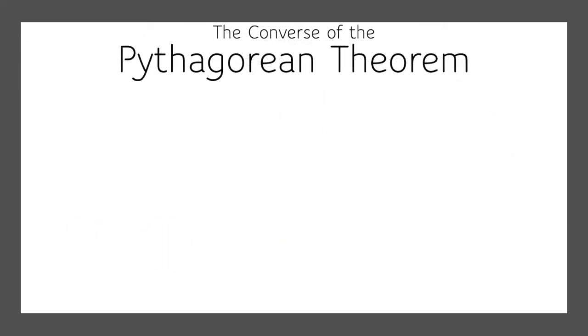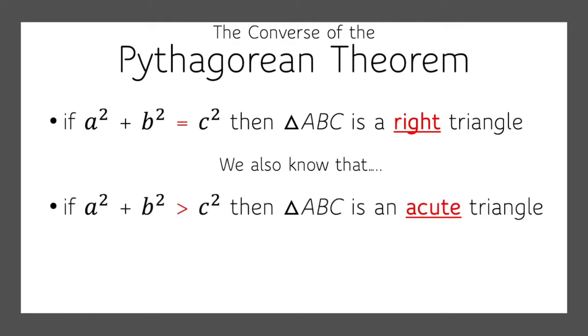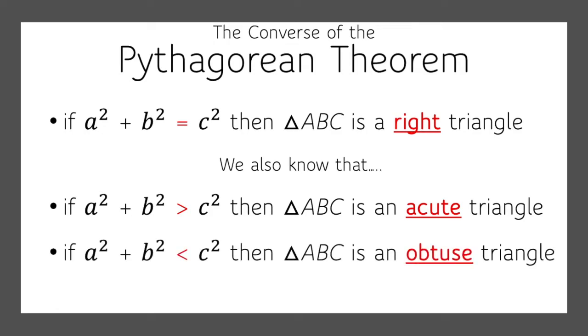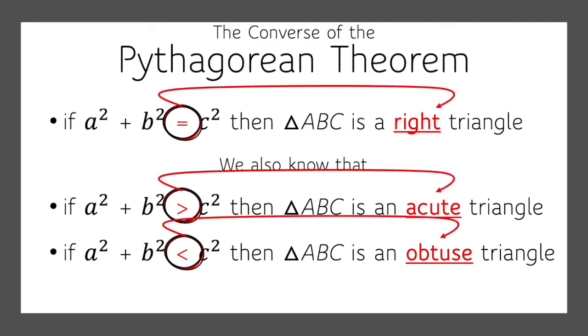Now, we have this thing called the converse of the Pythagorean theorem. And that says, if a squared plus b squared equals c squared, then we know we're dealing with a right triangle. We also know that if a squared plus b squared is greater than c squared, we're working with an acute triangle. If a squared plus b squared is less than c squared, then we're working with an obtuse triangle. So these signs right here, the relationship between a squared plus b squared, we compare that to c squared, gives us an indication as to what kind of triangle we have. So let's try this out.